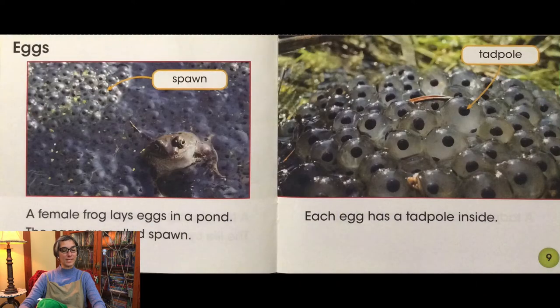A female frog lays eggs in a pond. The eggs are called spawn. Each egg has a tadpole inside.